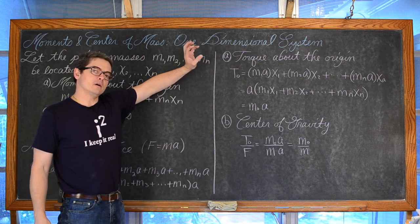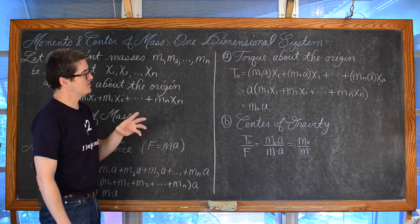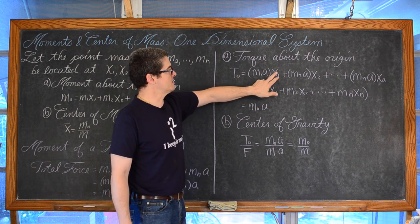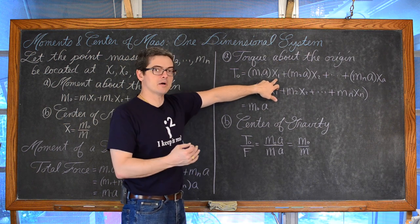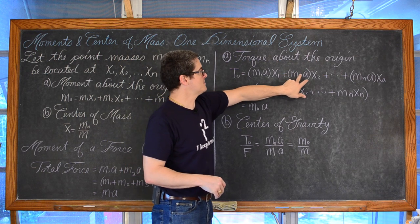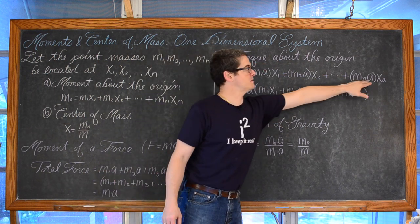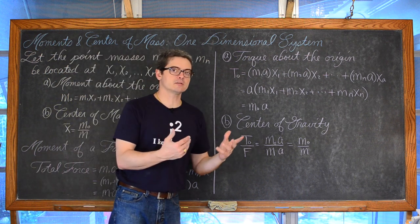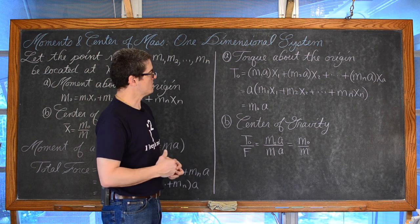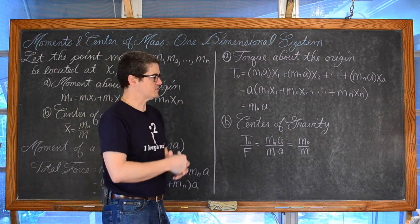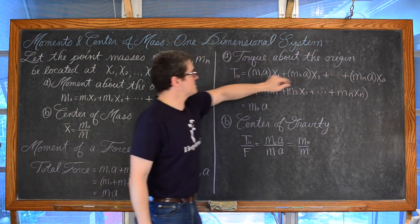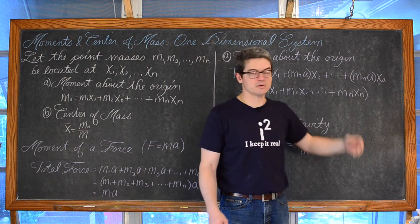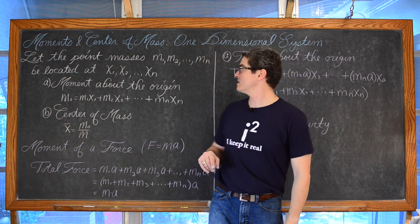Torque about the origin t sub 0 is equal to m sub 1 times acceleration times x sub 1, its distance away from the origin, plus m sub 2 times a times x sub 2, and so on until the last mass m sub n times acceleration times x sub n. X is still the distance away from 0 on the number line. Each of these terms has a constant a, so you factor that out and get a times the sum m sub 1 times x sub 1 plus m sub 2 times x sub 2, and we're starting to see the same thing as the moment about the origin.